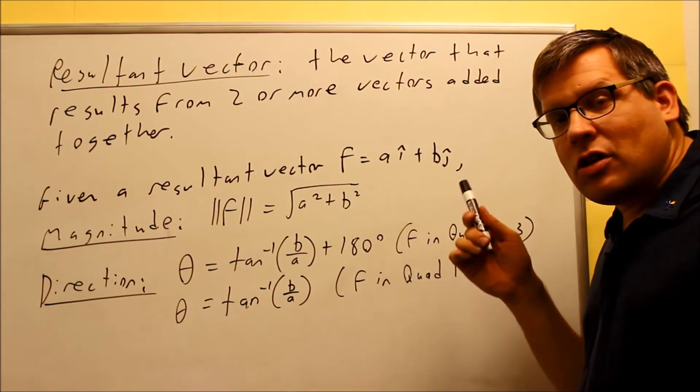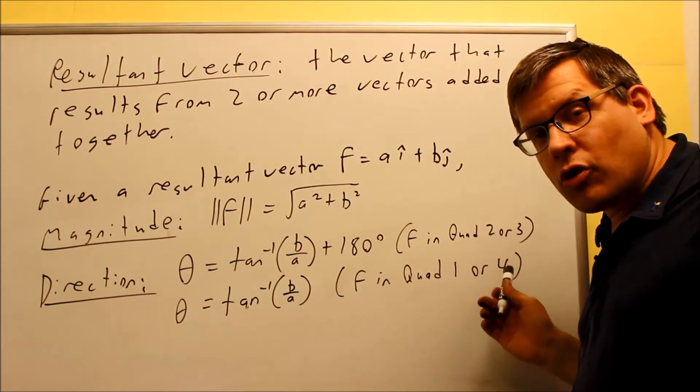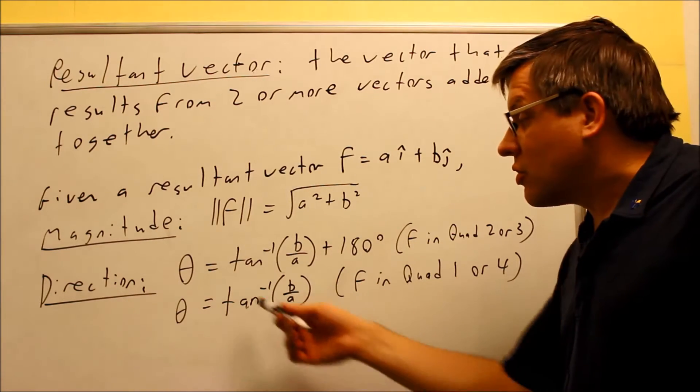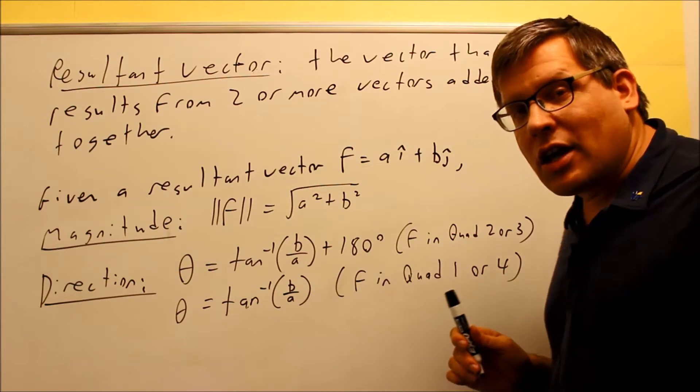Now, if the vector that you find here, this one here, ends up in the first or fourth quadrant, then you don't have to add 180 to it. You're still going to take the inverse tangent of b over a, but we don't need to add 180 in that case.